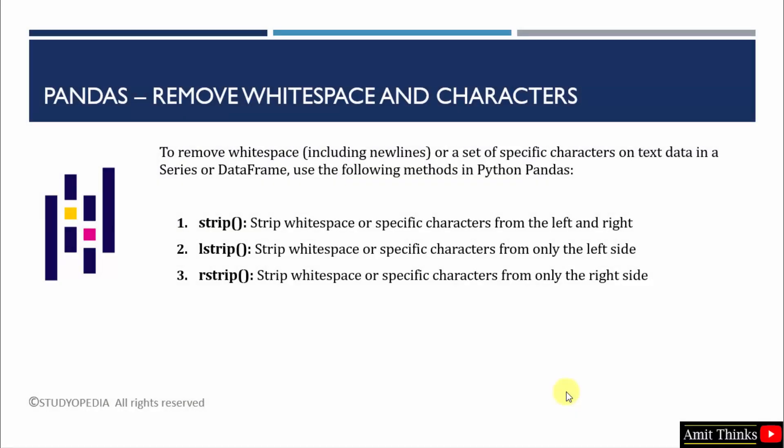In this lesson we saw how we can remove whitespace and characters from the left and right side. We focused on all three built-in functions of Python pandas: strip, lstrip, and rstrip.